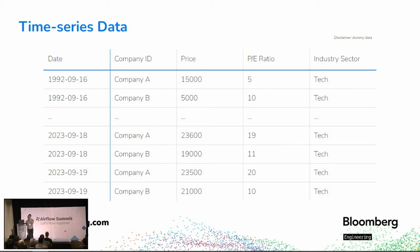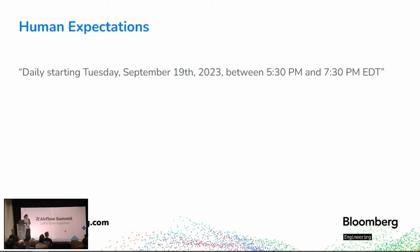We provide this service by ingesting date-partitioned data into the cloud in a lakehouse. What makes it all the more difficult are human expectations. Human expectations when accessing a time series data store can be verbalized like: 'daily starting Tuesday September 19 2023, between 5:30 PM and 7:30 PM EDT.' A simple statement like this encapsulates various different elements of reliability requirements.